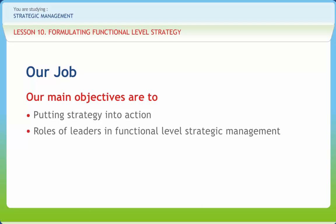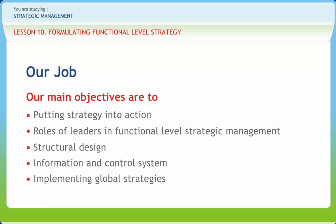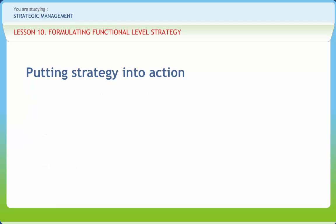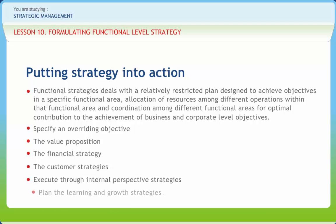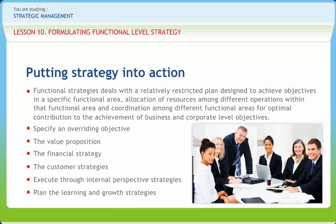After going through this presentation you should be able to explain: putting strategy into action, roles of leaders in functional level strategic management, structural design, information and control system, and implementing global strategies. Functional strategies deal with the relatively restricted plan designed to achieve objectives in a specific functional area, allocation of resources among different operations within that functional area, and coordination among different functional areas for optimal contribution. To plan and implement a functional strategy, it is pertinent to have a proper review of the functional structure of an organization.